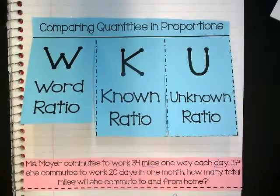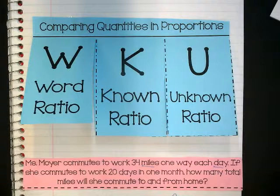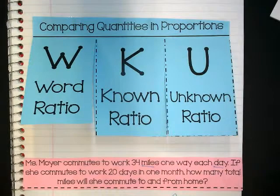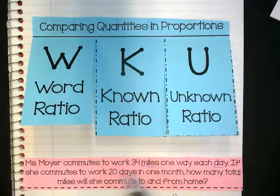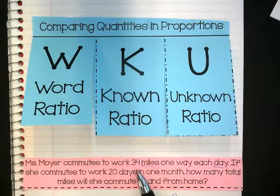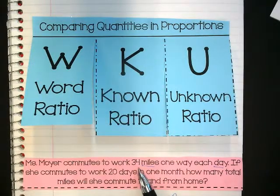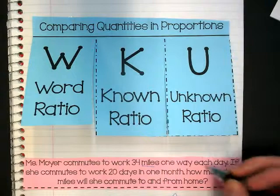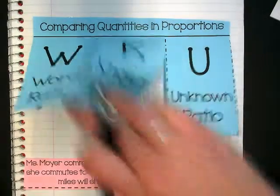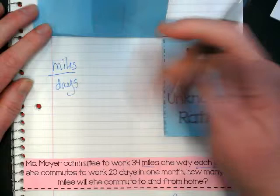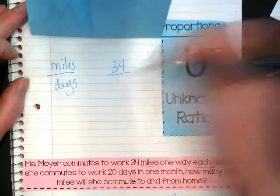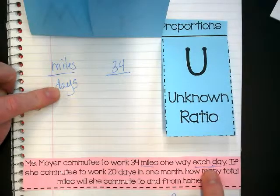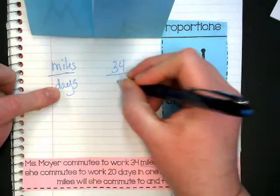Now I'm going to go back through my problem because when I'm setting up a proportion, there's always in a word problem information where we can completely set up the first ratio. And that's what we call our known ratio. The ratio that in the problem we can see both parts. And here it is, 34 miles each day. So if I'm looking at my word ratio and trying to set up my known ratio, how many miles do we have? 34. How many days do we have? She does that each day, so that would be one day.